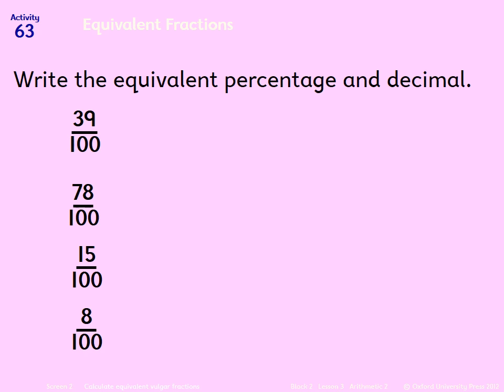Nice and simple, if you've got a fraction and it's over 100, all we need to do is change it straight to a percentage. So 39 over 100 means 39%, which is the same as 0.39. You can see the 39 in each of those.